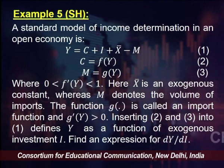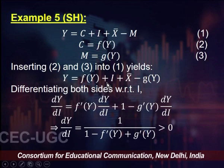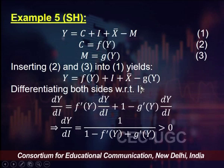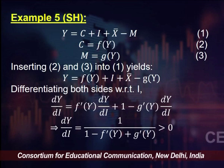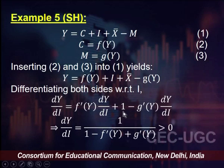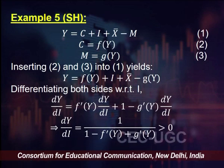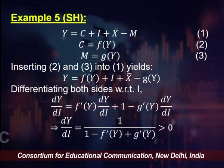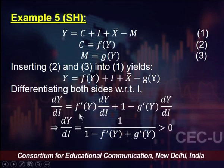To calculate dy/di I can substitute for C and M in equation 1, giving y equal to f(y) plus i plus X-bar minus g(y). Differentiating both sides with respect to i: dy/di equals f prime of y times dy/di plus 1 minus g prime of y times dy/di, since X-bar is an exogenous constant and differentiates to zero. Collecting terms in dy/di: dy/di equals 1 divided by (1 minus f prime of y plus g prime of y).